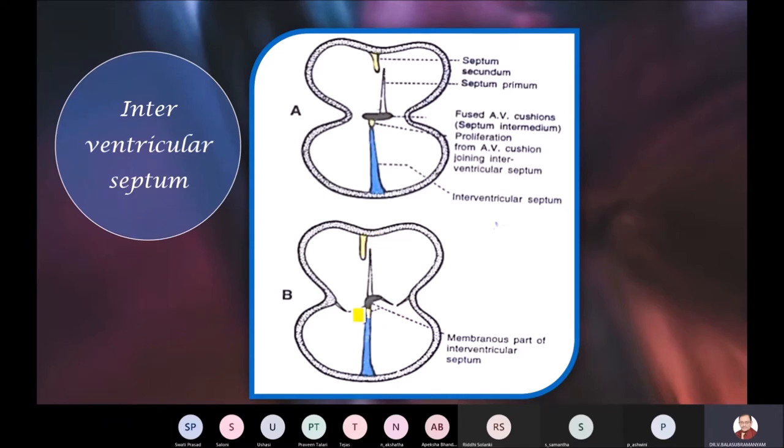Now this component is known as the membranous part of the interventricular septum. This is important because more frequently ventricular septal defects occur in this region, more frequently this is the region where interventricular septal defects are known to occur.